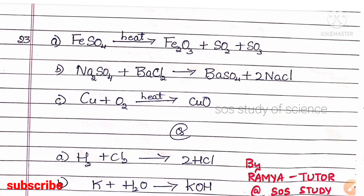Question 23 asks you to write balanced chemical equations. First: iron sulfate is heated to give iron oxide, sulfur dioxide, and sulfur trioxide — FeSO₄ (heated) → Fe₂O₃ + SO₂ + SO₃. Second: sodium sulfate combines with barium chloride — Na₂SO₄ + BaCl₂ → BaSO₄ + 2NaCl. This belongs to double decomposition reaction, while the previous belongs to thermal decomposition reaction.